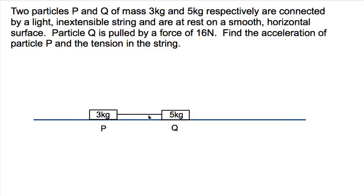Light means that we can ignore its mass for any calculation purposes and inextensible means that whenever Q moves it's going to drag P at exactly the same velocity and whenever P moves it's going to take Q at exactly the same velocity. The same thing with accelerations, they can't be different, and because if it extended that's when they could be different, so you'll only ever see inextensible strings in A level mechanics.